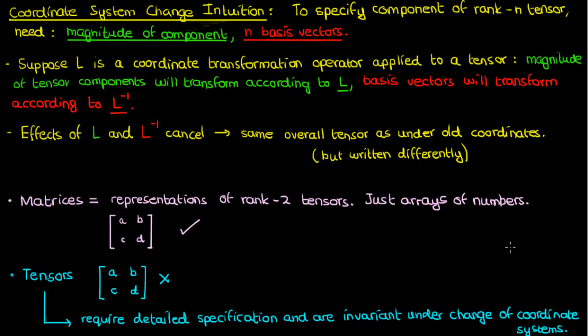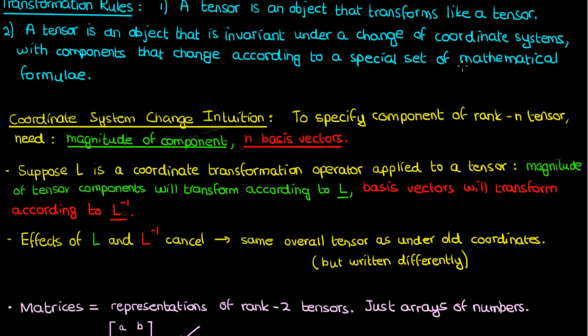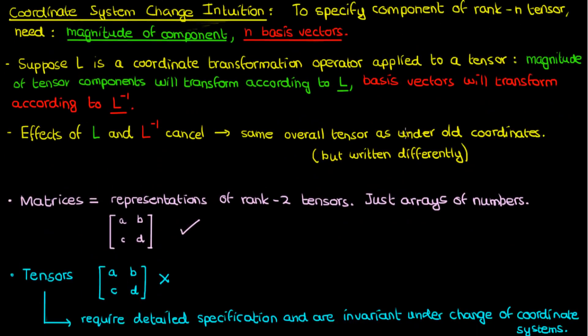A matrix, however, is not defined according to these properties. It's just a collection of numbers. Anyway, that should do it for the lesson. I didn't really go too much into the mathematical formulas for tensor transformation, because in order to do that, I need to talk about Einstein notation first, and that's what I'll do in the next video.